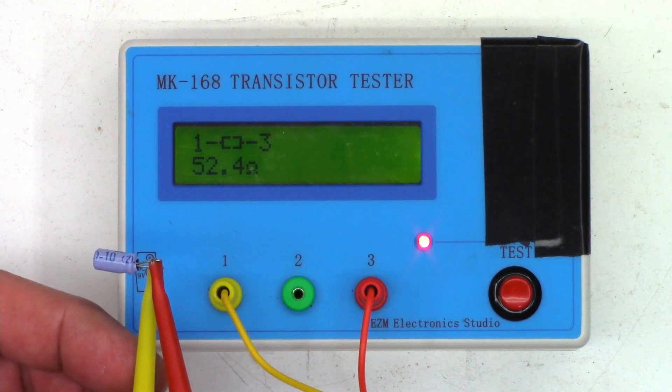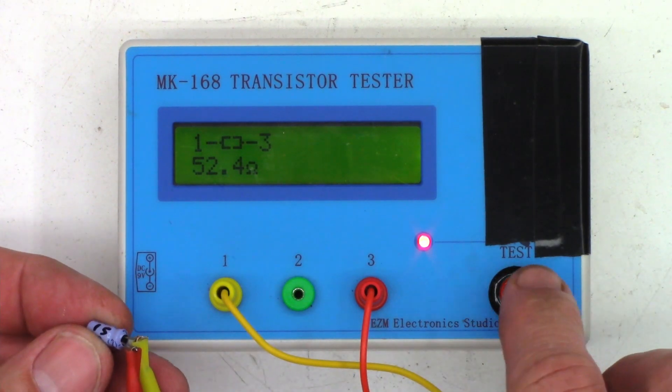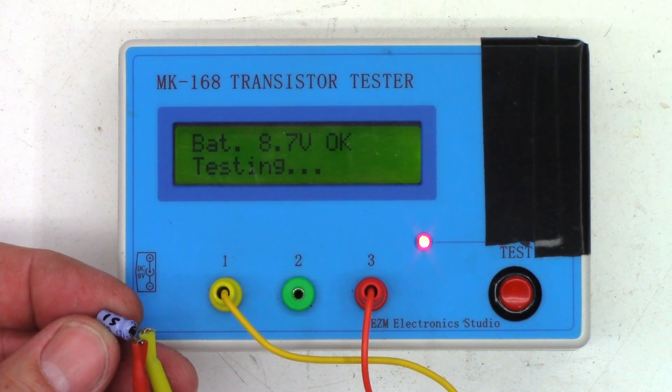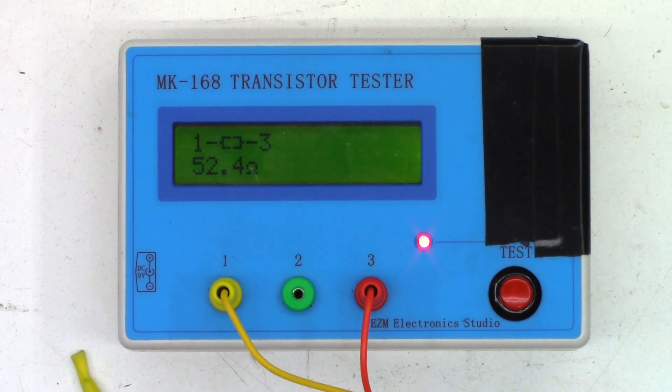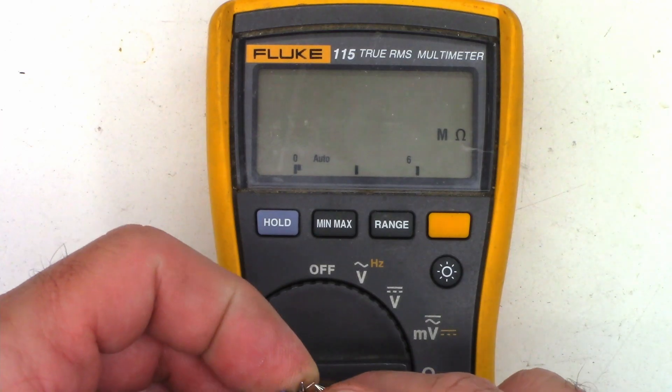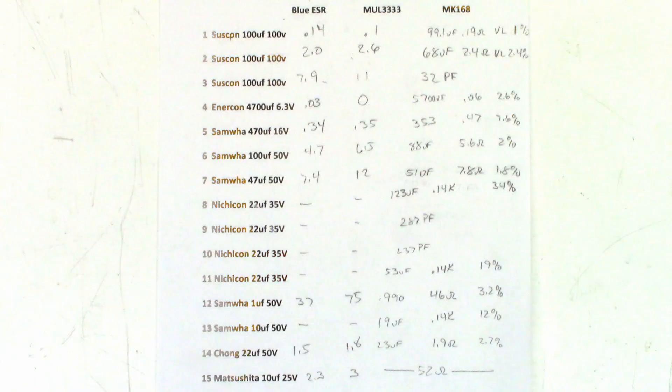So the only tester that actually found this was the MK168. For the heck of it, let's test it one more time. Yeah, 52 ohms. Okay, well let's test that last cap with the Fluke, see what kind of resistance we read on it. And I read 51.9 ohms. Pretty doggone close.